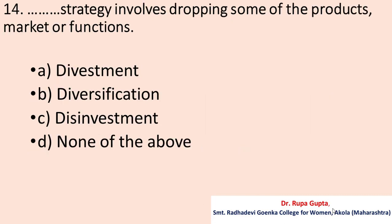Question number fourteen: 'Dash' strategy involves dropping some of the products, markets, and functions. Option A: Divestment. B: Diversification. C: Disinvestment. D: None of the above. The correct answer is A, divestment.